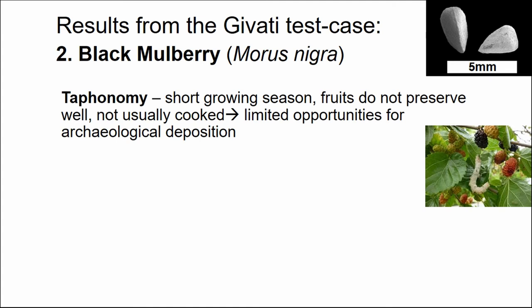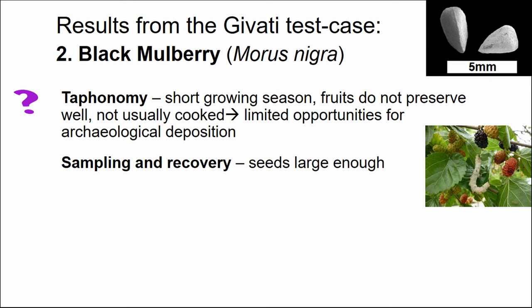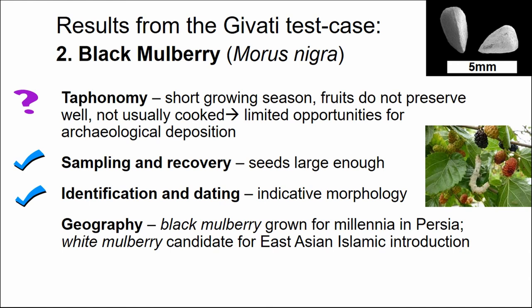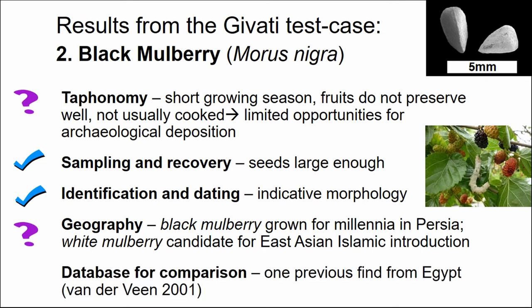The black mulberry is not so simple. Taphonomically, there may be limited opportunities for archeological deposition — it has a short growing season, fruits don't preserve well, and it's not usually cooked, so it may not make it to the site in the first place. The seeds are large enough for sampling. Identification can distinguish between black and white mulberry, which matters because the black mulberry has grown for millennia in Persia, while the white mulberry is a candidate for an Islamic-period east Asian introduction possibly tied to an early Islamic textile revolution.